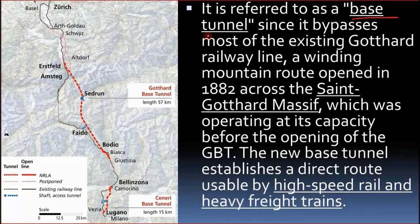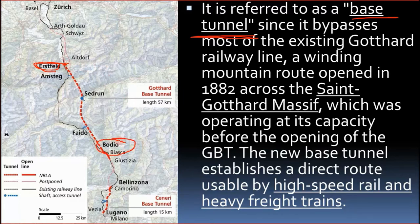It is referred to as a base tunnel because it is the deepest among all the tunnels in this area. Some important points: Erstfeld is the northern portal of the tunnel, and Bodio is the southernmost point. From north to south you have Erstfeld, Amsteg, Sedrun, Faido, and Bodio. You can also see the Ceneri Base Tunnel in the south.